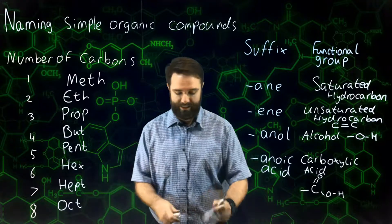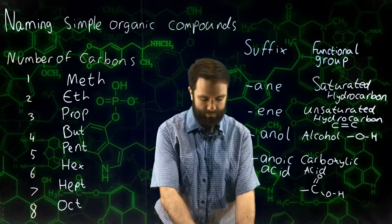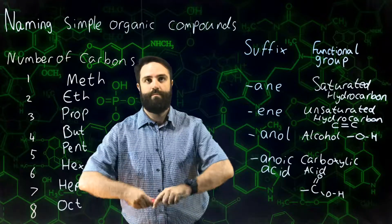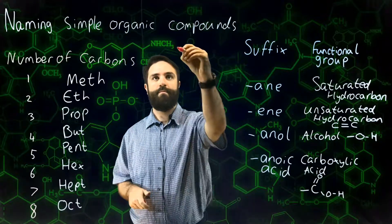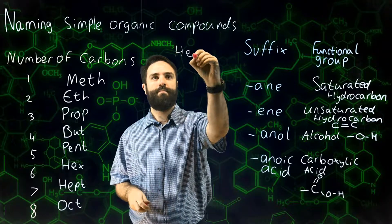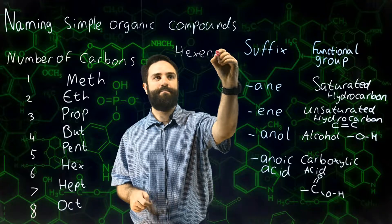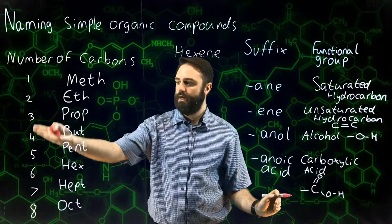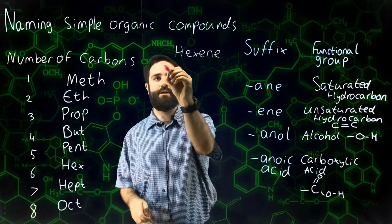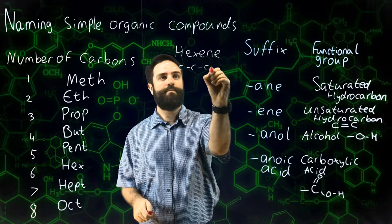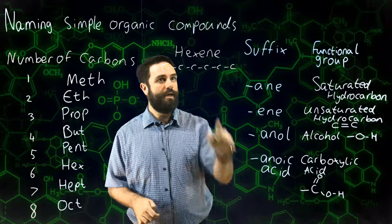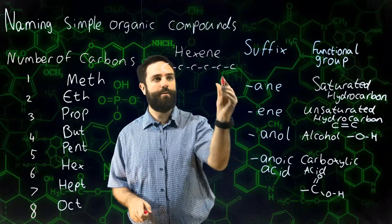So as an example, if you saw the name hexene, you would look at your number of carbons. Hex tells you there are six carbons. Ene tells you that there is a double bond present.